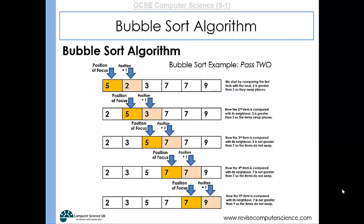However, the bubble sort algorithm isn't intelligent. It simply will only know that the array is ordered if there is a final pass where there are no swaps. So a third pass would be required here by the bubble sort algorithm to ensure that there are no more swaps and to be satisfied that the array is in order.